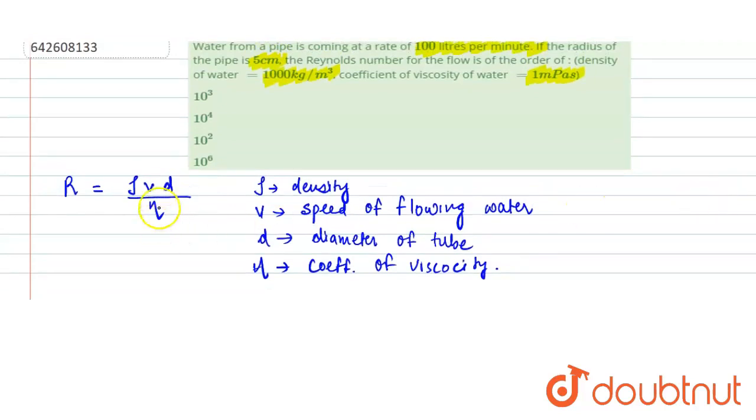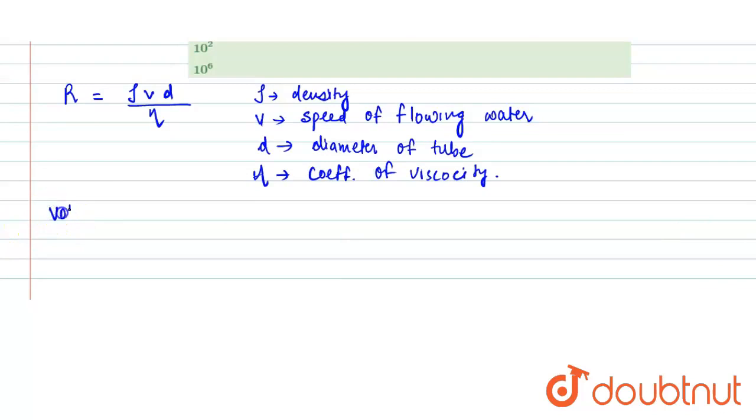So let's first find the speed of flowing water. We are given the volume flow rate, which is 100 liters per minute. Volume flow rate is given by ΔV/Δt, which equals 100 liters per minute. In one liter there are 10⁻³ meter cube, and in one minute there are 60 seconds. So this is the volume flow rate in meter cube per second.